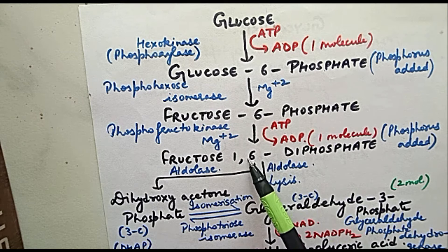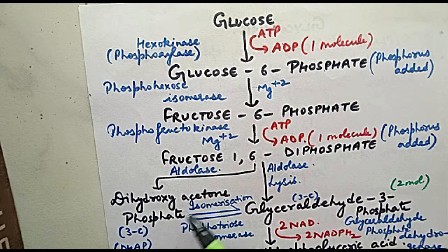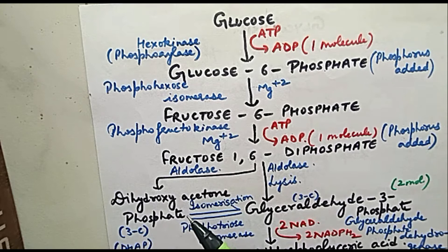After that, it is going to break down. Fructose-1,6-diphosphate undergoes lysis and will be converted into two types of molecules: dihydroxyacetone phosphate and glyceraldehyde-3-phosphate. We call dihydroxyacetone phosphate in short form DHAP.